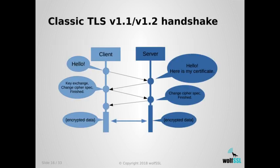This is the classic TLS 1.2 handshake. As you can see, the client initiates the communication by sending a hello, and the server sends back the certificate. Then there's a key exchange and possibility to change the cipher — this takes two complete round-trip times before encrypted data can actually be exchanged between the two peers.